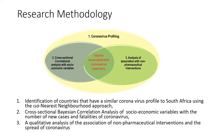Our methodology had three phases. The first phase involved profiling the countries based on their coronavirus statistics. The second phase involved cross-sectional correlational analysis of socioeconomic variables and the number of new cases and fatalities of coronavirus. The last phase was the qualitative analysis of the association of non-pharmaceutical interventions with the spread of the virus. We used profiling to get countries with similar coronavirus profiles to Africa, then did cross-sectional correlation analysis within that group of countries.